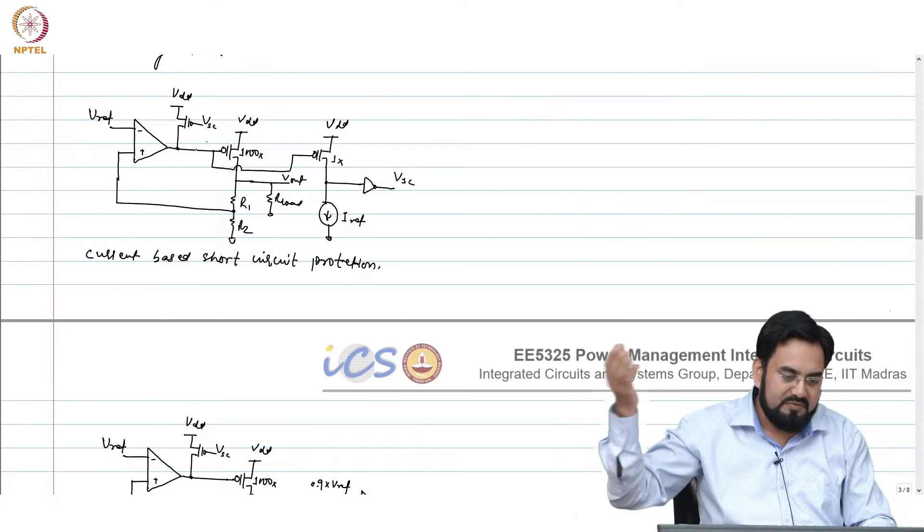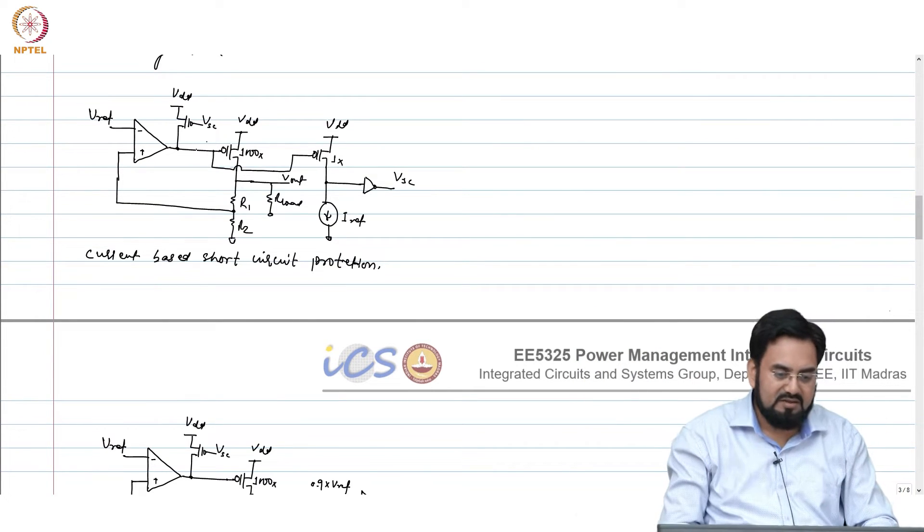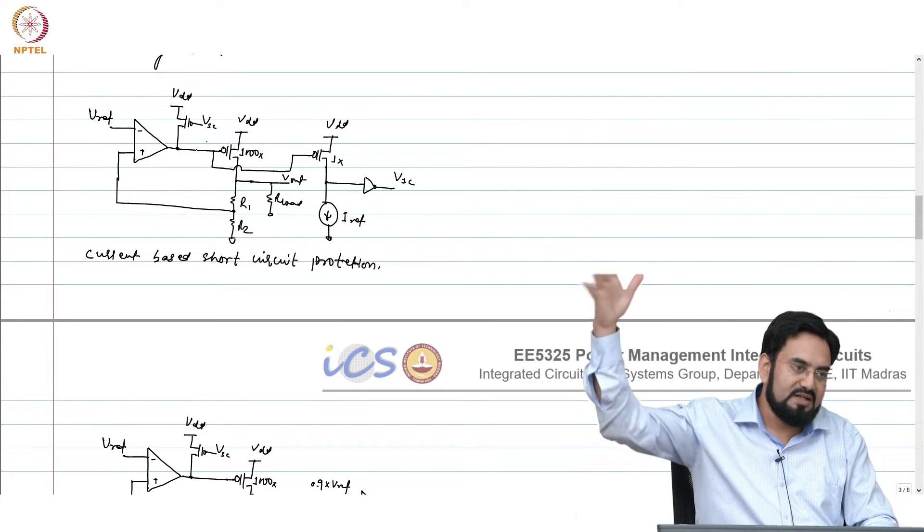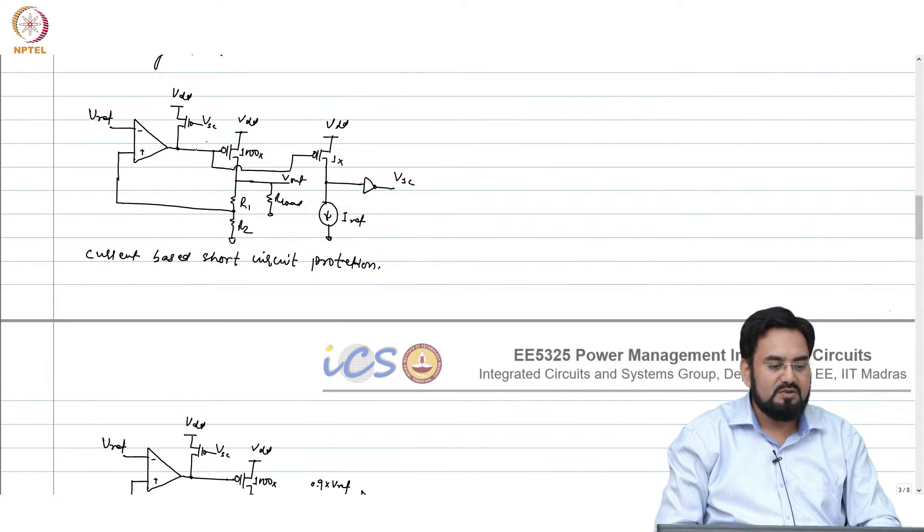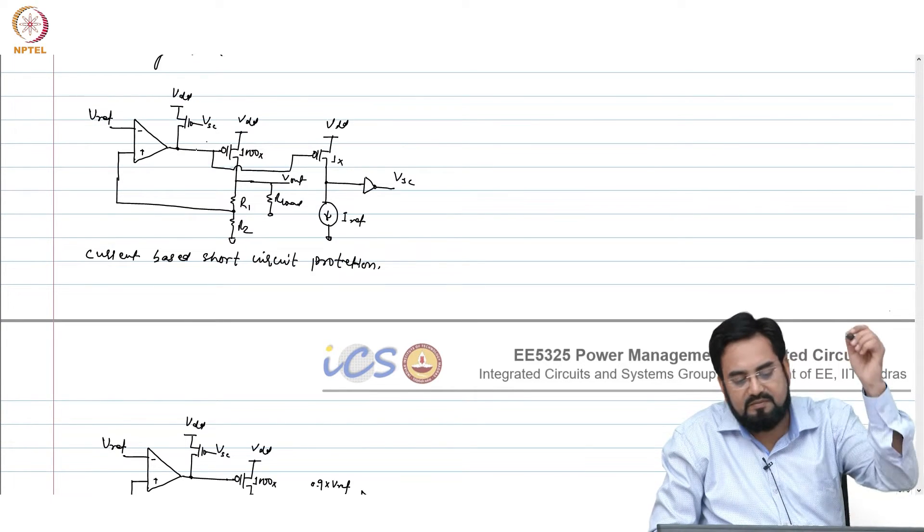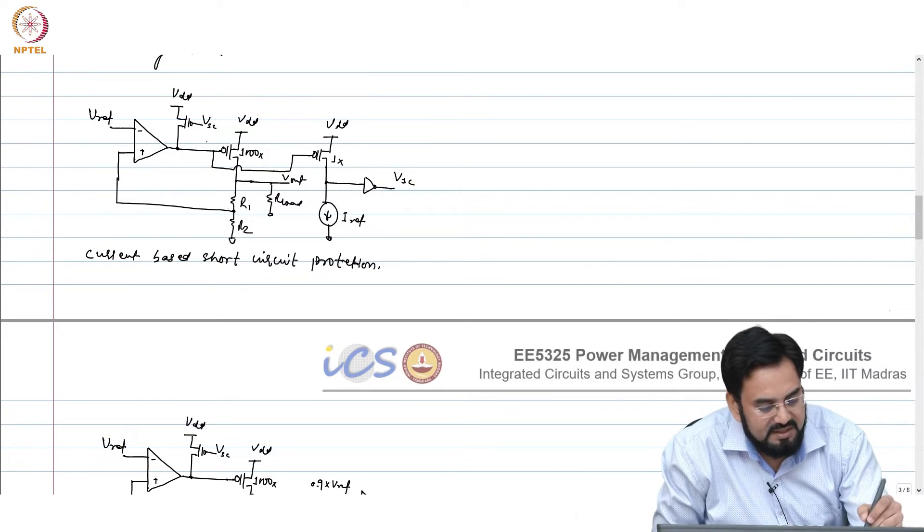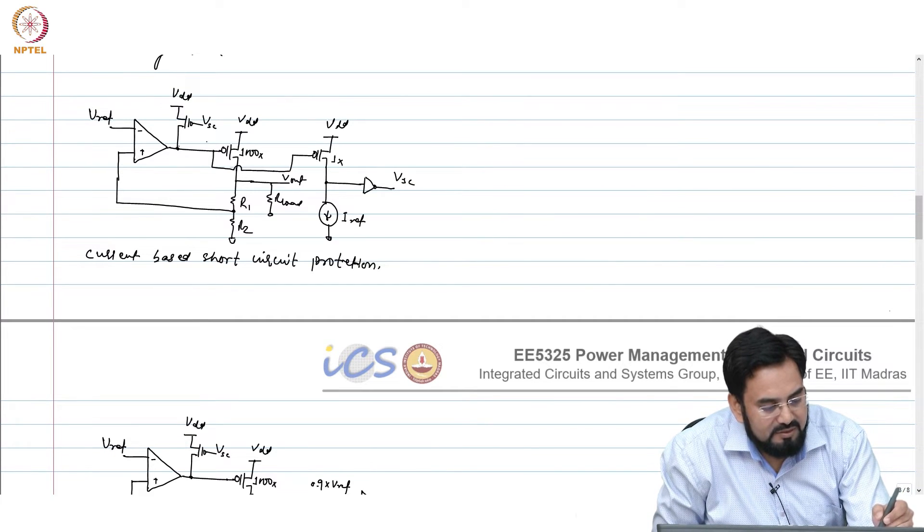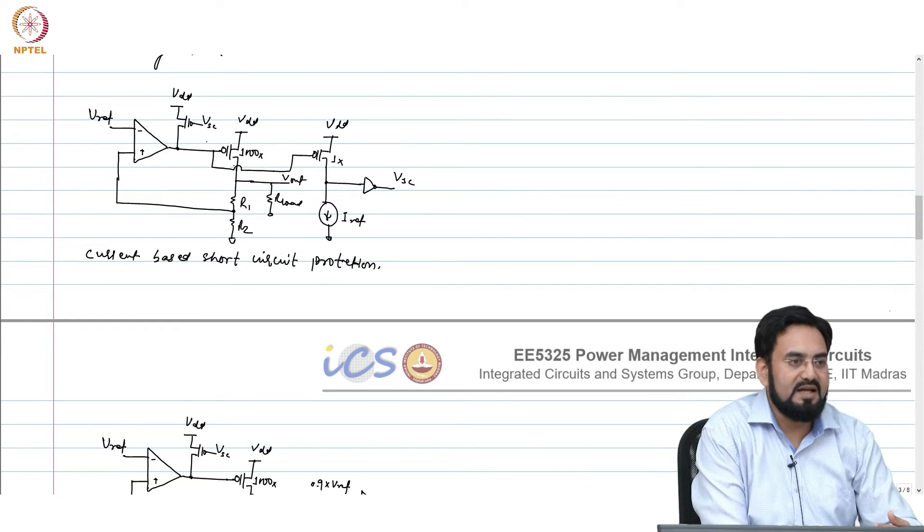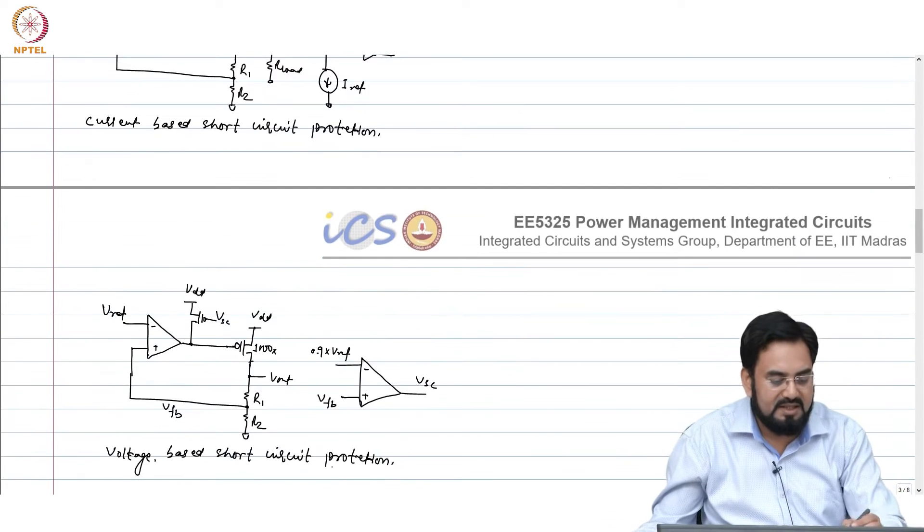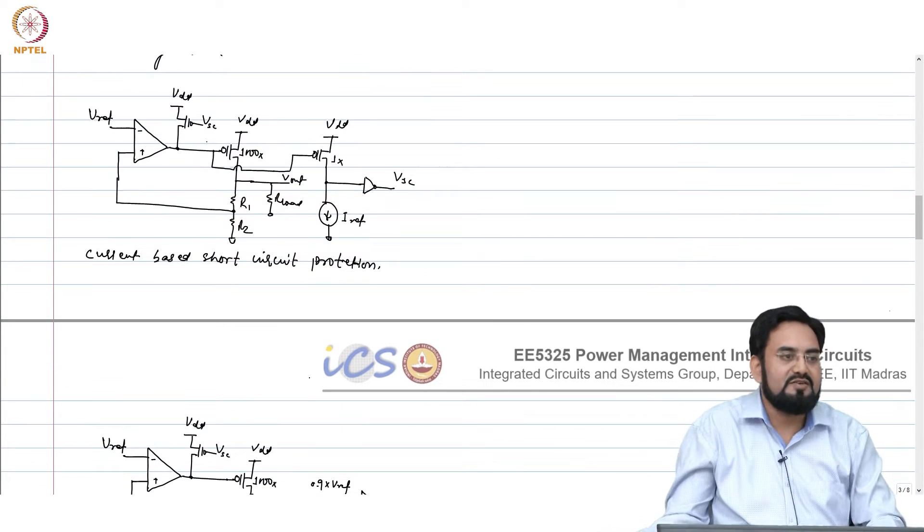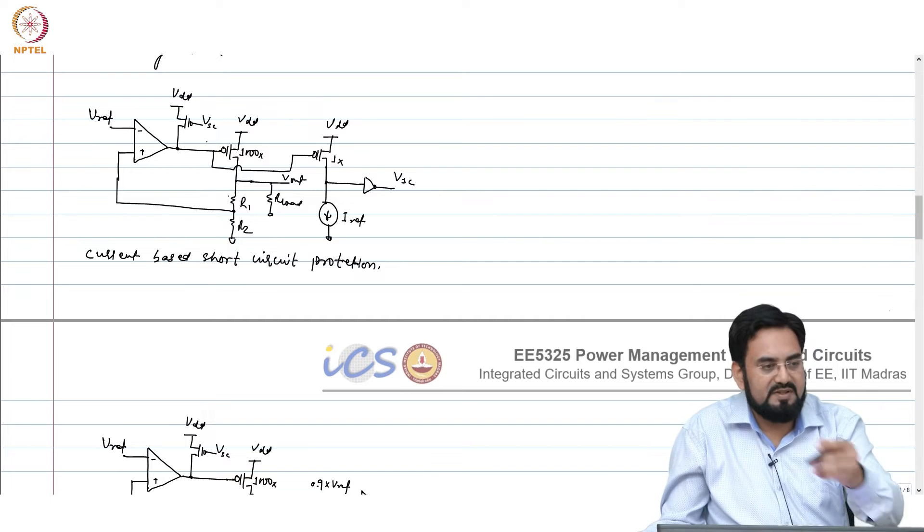But let us say you are slowly increasing the load current and you are going beyond the limits. Let us say you have designed your regulator for 1 milliamp and it started increasing 1, 2, 3, 4 and going let us say 10 milliamp. When it reaches up to 10 milliamp, if you give a sudden change, then your loop will take some time to respond and your output will keep dropping until that time. And it is quite possible that it may go below your threshold and this will trigger and turn off your MOSFET.